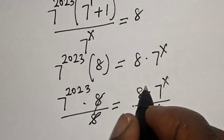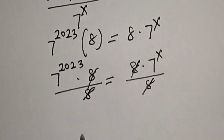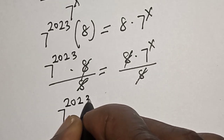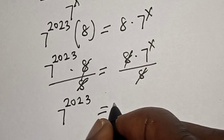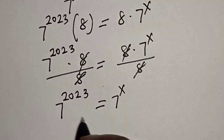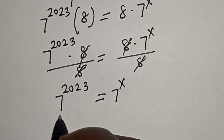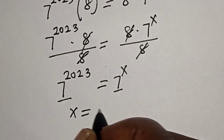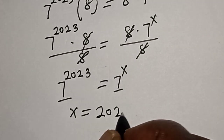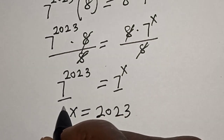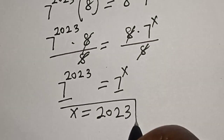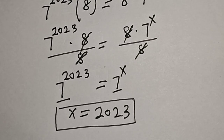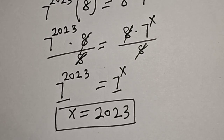This 8 will cancel this 8, and we are left with 7 raised to power 2023 is equal to 7 raised to power x. They have the same base 7, therefore x is equal to 2023. That is our final answer. Before you leave, like, share, comment and subscribe. Thank you, bye bye.